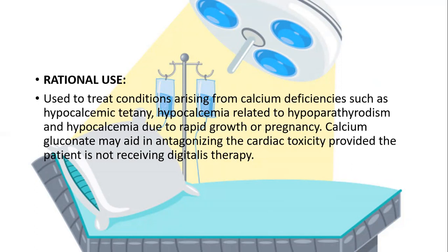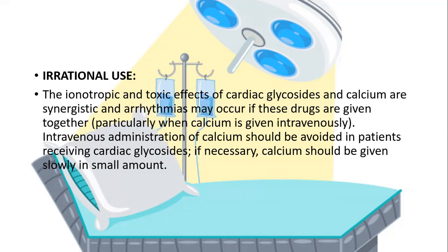The rational use of calcium gluconate is to treat conditions arising from calcium deficiencies, such as hypocalcemia related to hyperparathyroidism and hypocalcemia due to rapid growth or pregnancy. Calcium gluconate may also aid in antagonizing cardiac toxicity, provided the patient is not receiving digitalis therapy. Irrational use is considered inotropic.